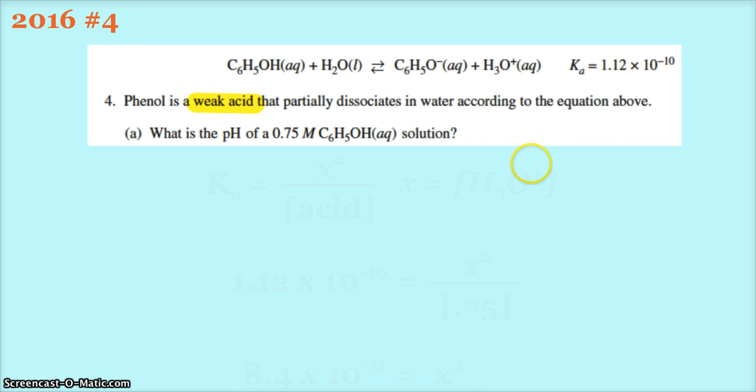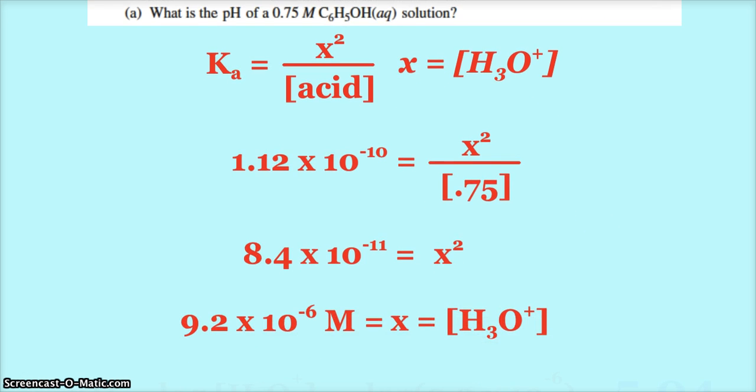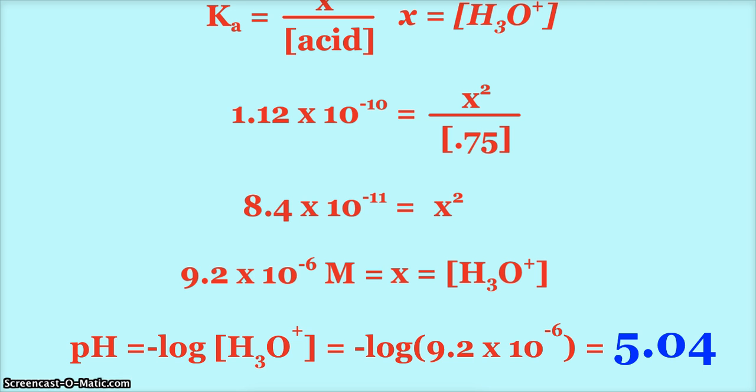Hopefully you remember because it's something we did a lot. Our Ka is equal to x squared over the concentration of the acid, and of course x represents hydronium. Now that you recognize that, I just plug and chug. I've got my Ka, I've got my concentration of my acid, I just got to solve for x which is hydronium.